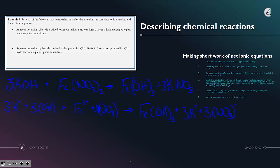Net ionic equations have us remove the spectator ions. The spectator ions are things that are the same in the reactants and products. Three potassiums remain three potassiums and three nitrates remain three nitrates. So they are our spectator ions.